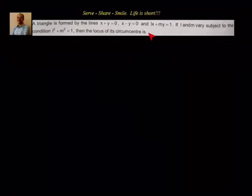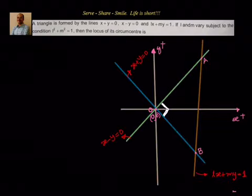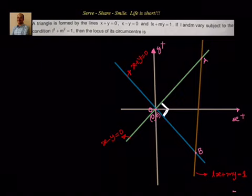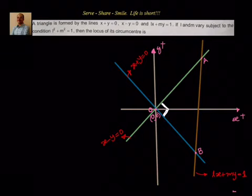We have to find the locus of the circumcenter of the triangle formed by these three lines. Let's try to draw a rough diagram and see how these three lines look like. x minus y equal to 0 is this line, x plus y equal to 0 is this line, and lx plus my equal to 1 is a third line intersecting them. So this is the triangle OAB we have now, and we have to find out the locus of its circumcenter.